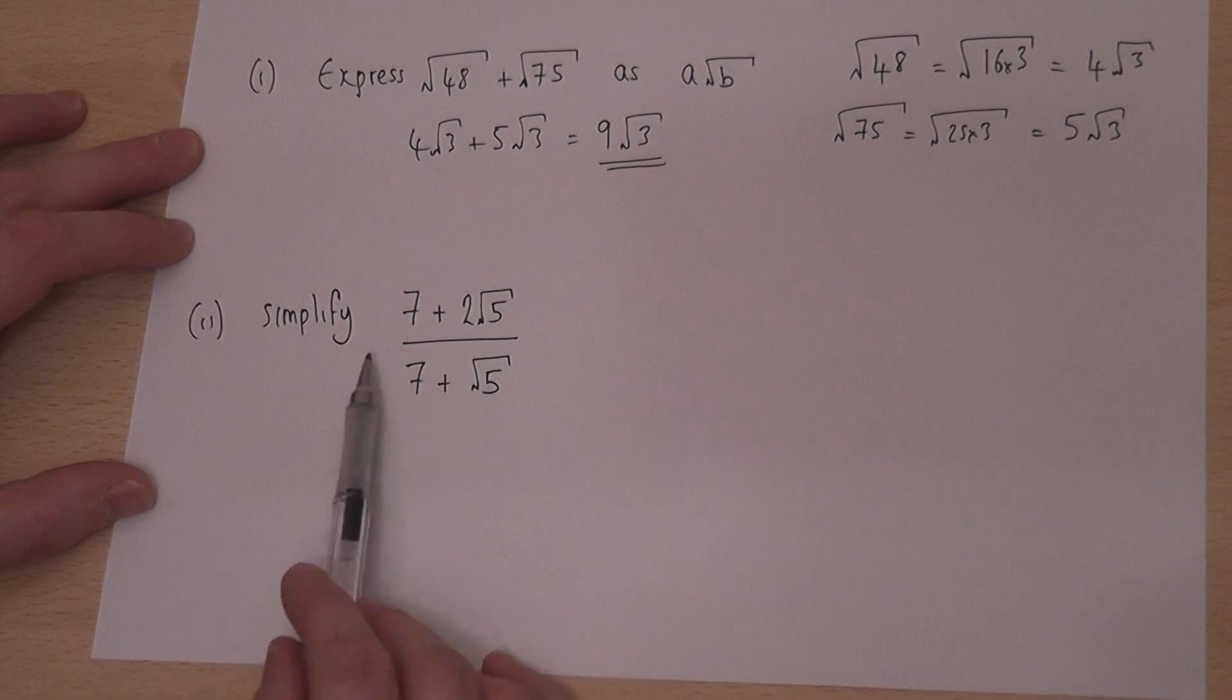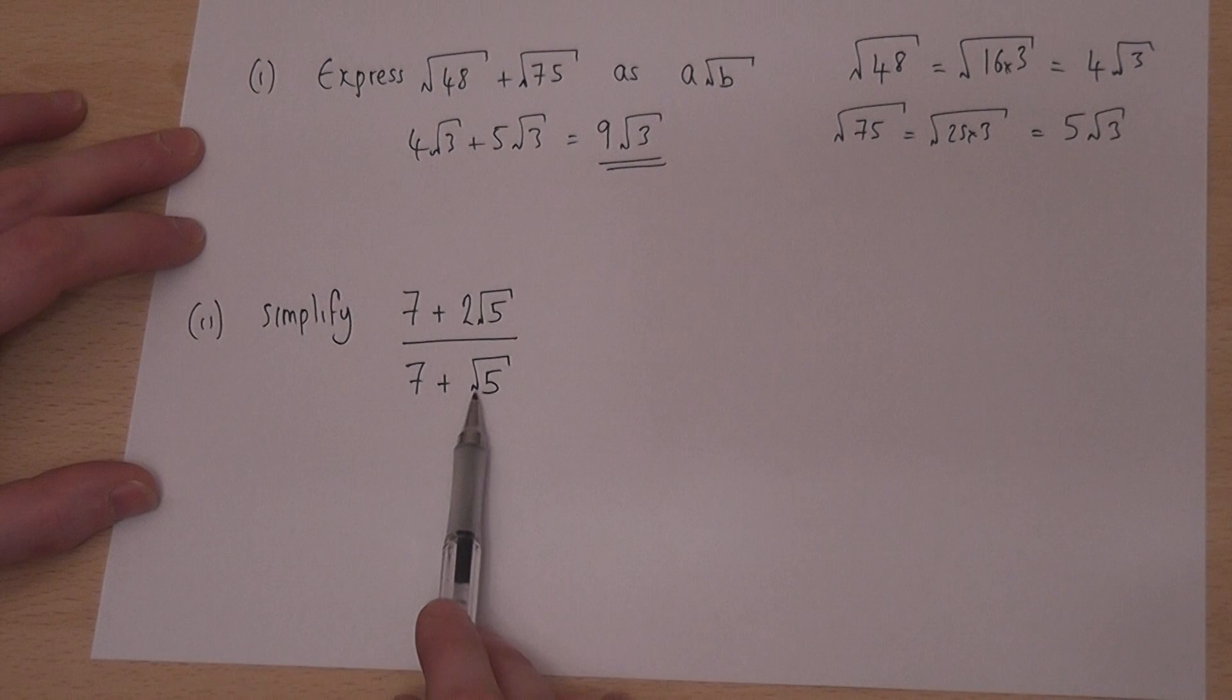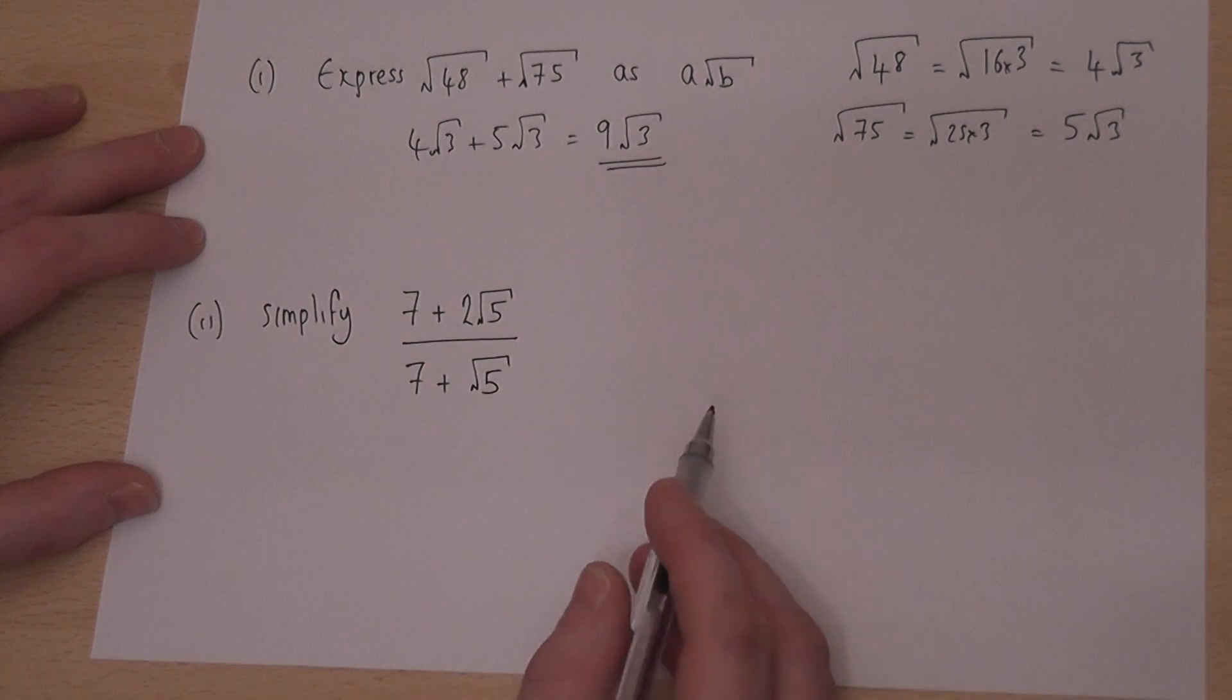The second one is an algebraic fraction involving surds, and we have 7 plus root 5 in the bottom, and the aim of this is to get the surd away from the bottom of the fraction.